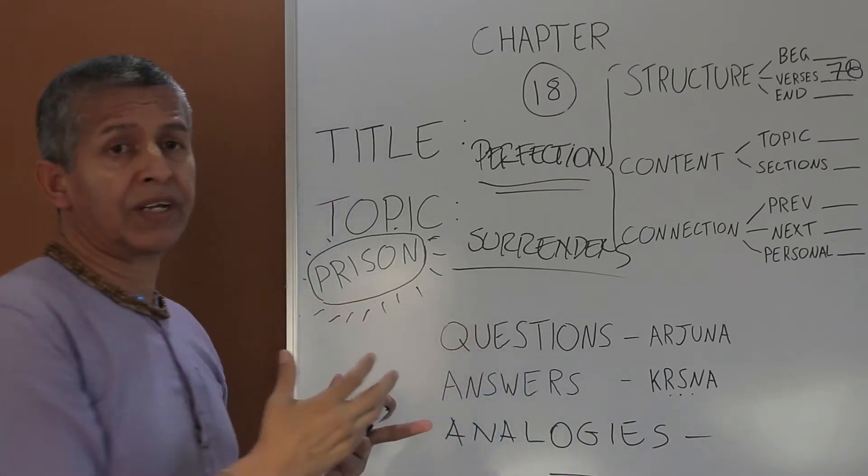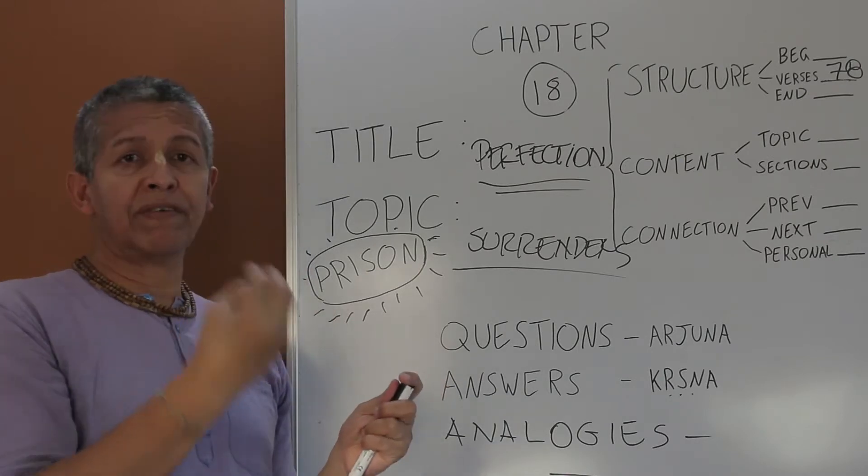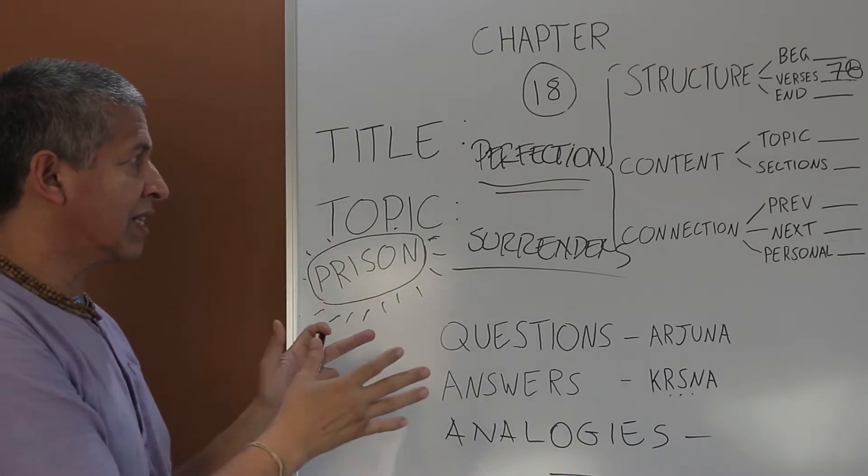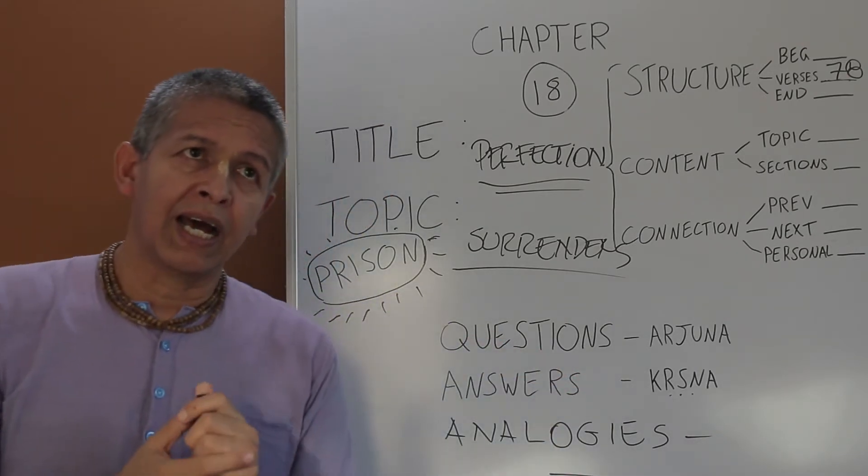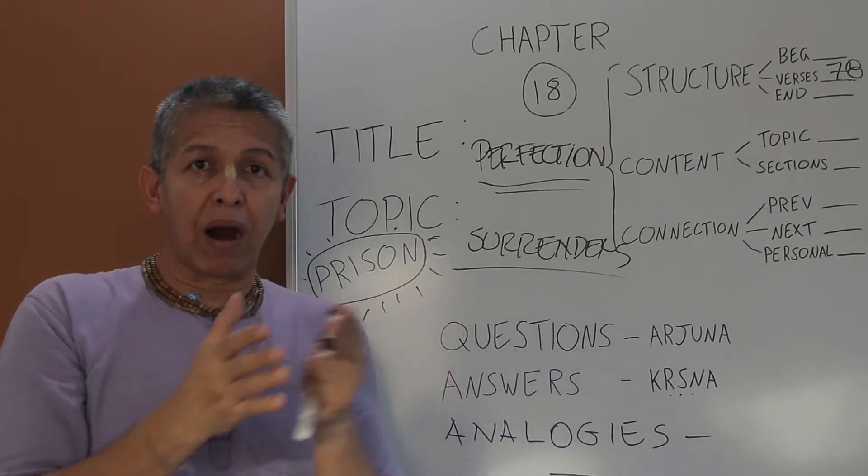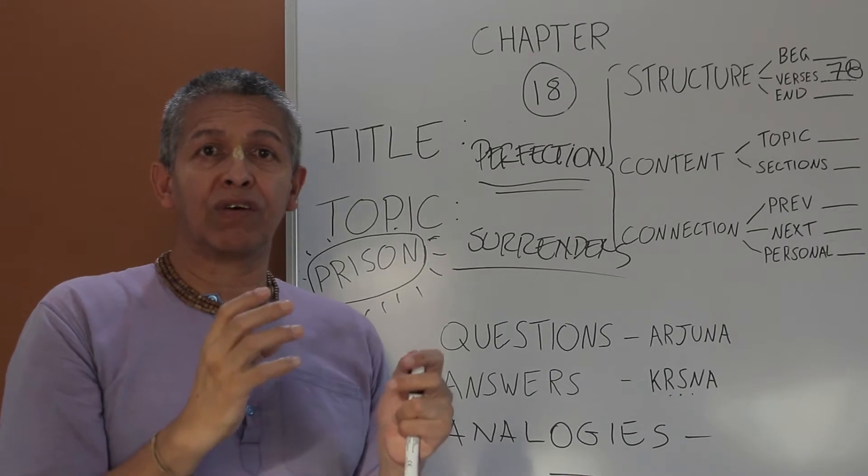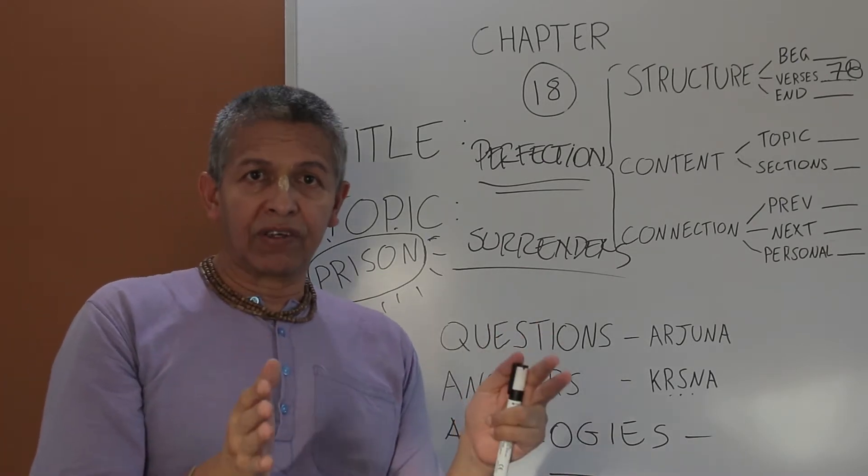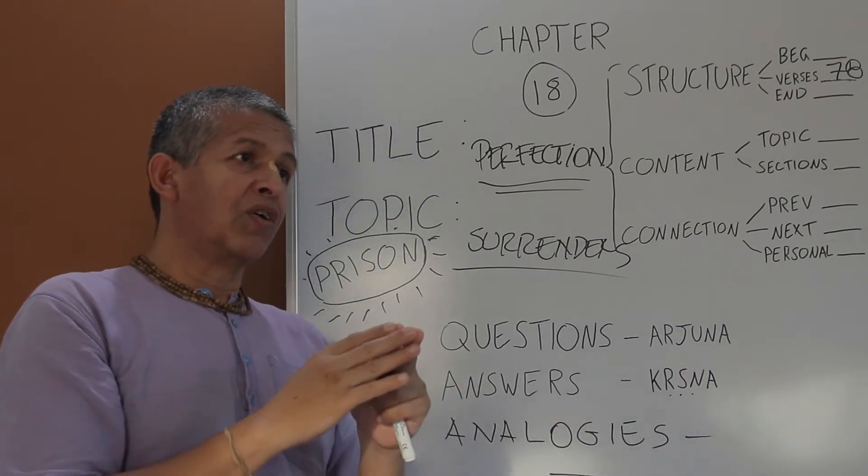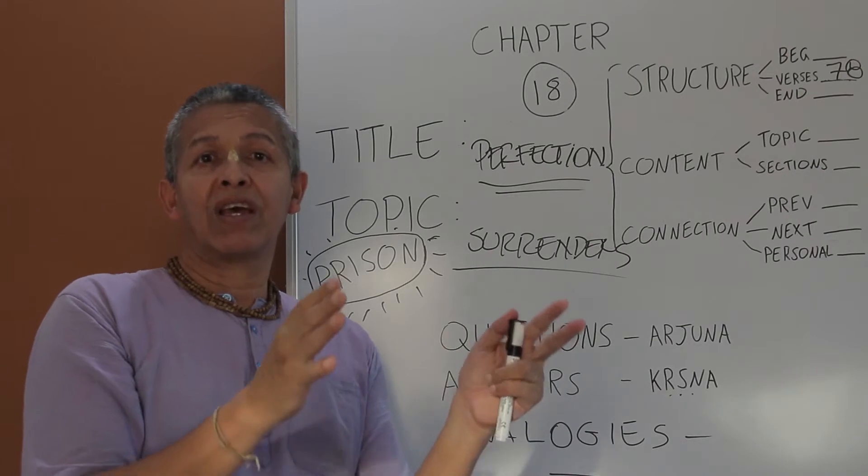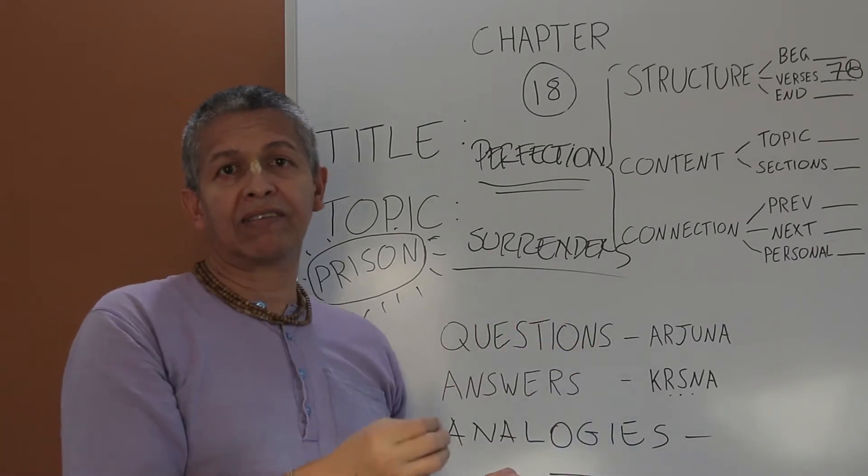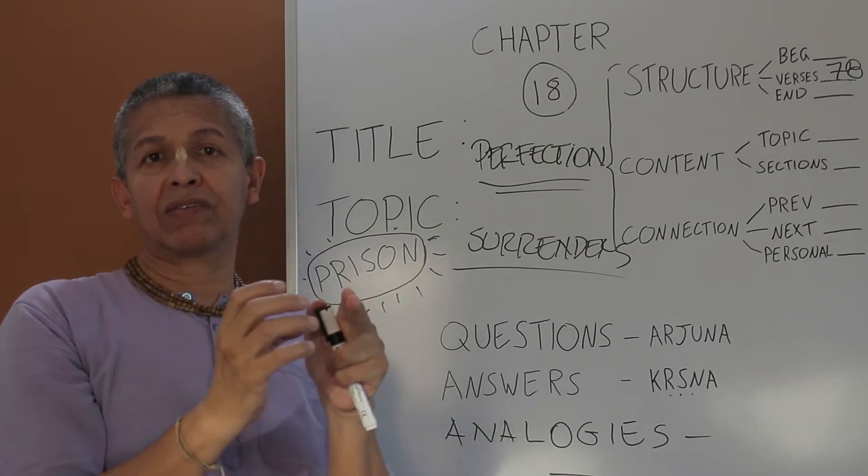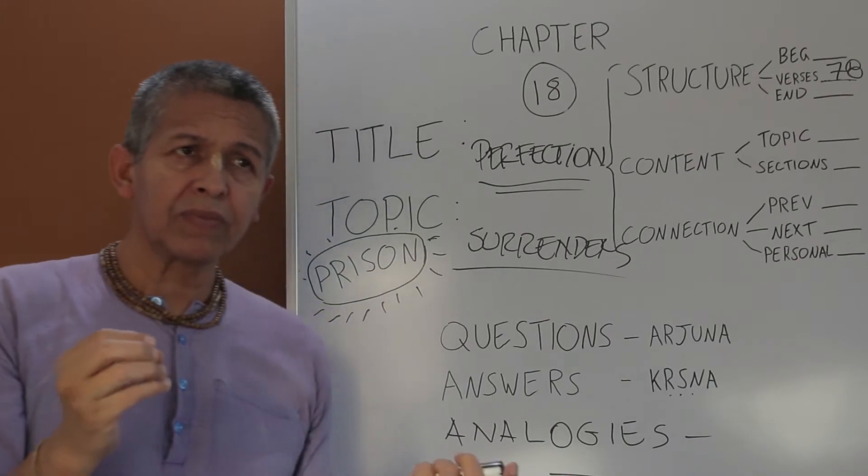The topic as I pointed out is surrendering. How the Jiva, how Arjuna, how the living entity needs to surrender to Krishna and in that way can achieve perfection. So that is more or less the content that this chapter has. Very interesting because it has technical parts of it and also has a very summarized explanation of what the Varna system is. And after this Krishna gives us in around 30 verses, he gives us the summary. If you don't have time to read 78 verses or if you don't have time to read the 700 verses, if you just read the last 30 or so verses of the Bhagavad Gita, you can get the essence of the whole book.